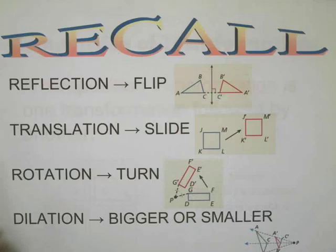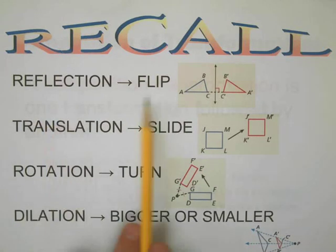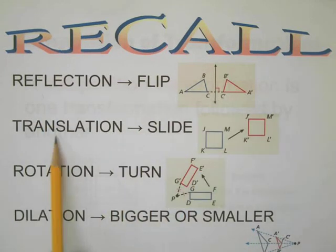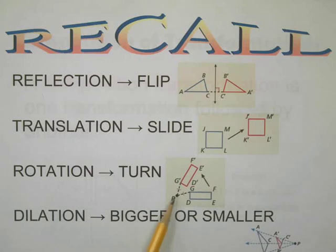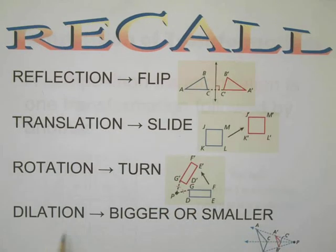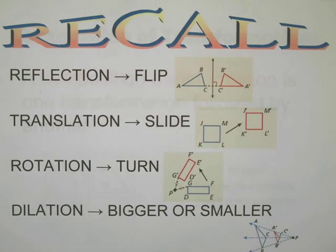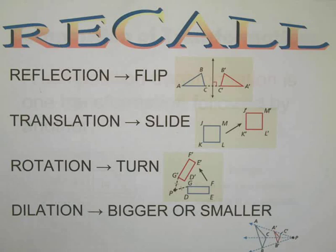Before we get going, let's talk about the vocabulary. A reflection means we're going to flip something over. A translation is a fancy word for a slide. Rotation means we're going to pivot an object — turn it around a pivot point. Dilation means we're going to make that thing either bigger or smaller depending on the scale factor. With a negative scale factor we're doing bigger/smaller and rotations at the same time.